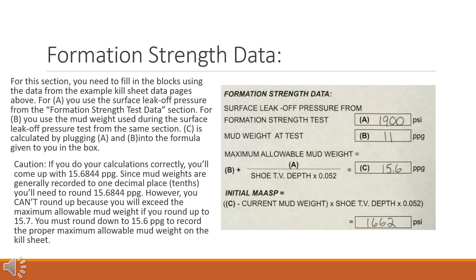For A, you use the surface leak off pressure from the formation strength test data section. For B, you use the mud weight used during the surface leak off pressure test from the same section. C is calculated by plugging A and B into the formula given to you in the box. If you do your calculations correctly, you'll come up with 15.6844 ppg.